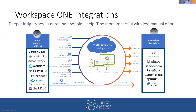Let's look at some automation examples. Workspace ONE Intelligence serves as a facilitator — a platform for telling you what's going on and providing automated remediation. Reading left to right, we have VMware Trust Network Partners — security-space network vendors that can feed data directly into Workspace ONE Intelligence. At the top are endpoint sensors: we can write PowerShell scripts, and anything extractable via PowerShell can become an input into Workspace ONE Intelligence.